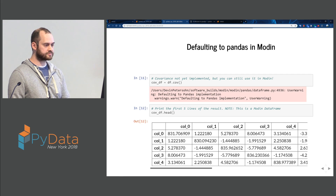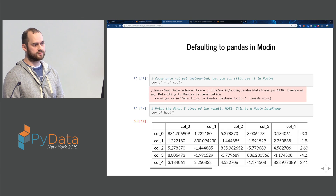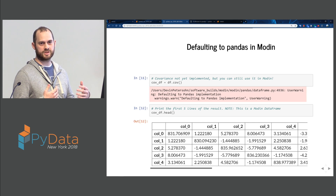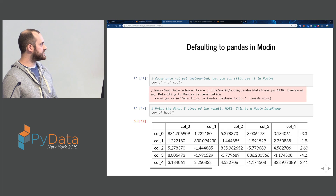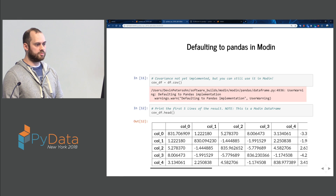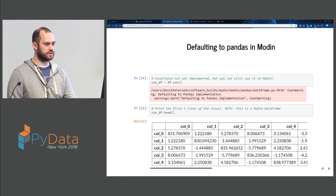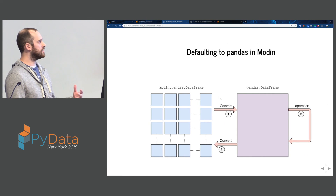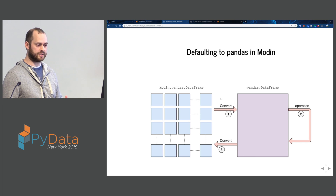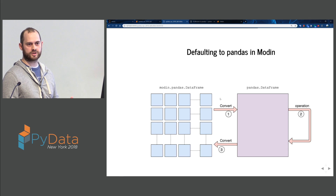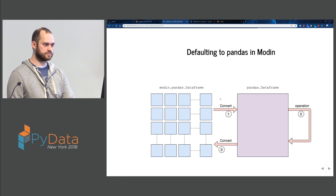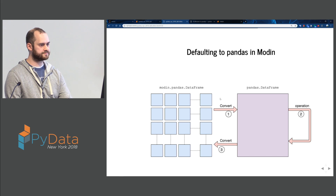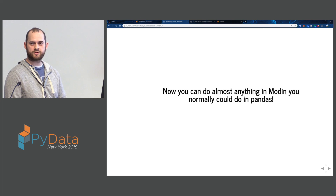If you do df.cov, we see a warning that says 'defaulting to Pandas implementation.' This is how you know Modin is not working in parallel, and you should expect a little bit lower performance. When we do head, we see the covariance was in fact calculated, and it returns a Modin DataFrame. What we're doing is effectively taking our distributed Modin DataFrame, converting it to Pandas, performing the operation, and converting it back.